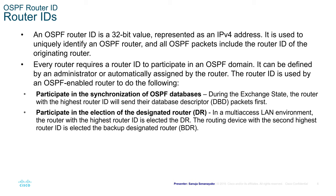The passive-interface command in router configuration mode prevents the transmission of routing messages through a router interface while still allowing that network to be advertised to other routers. Interfaces connected to devices other than OSPF routers should be set as passive. The show ip protocols command can be used to verify the interface is listed as passive. After entering passive-interface loopback 0 in router OSPF 10 configuration and running show ip protocols, you can see loopback 0 listed as a passive interface.